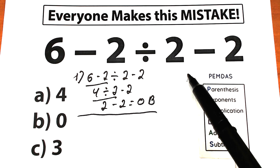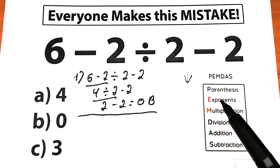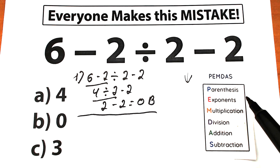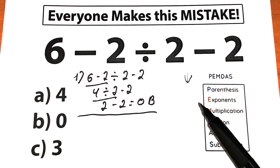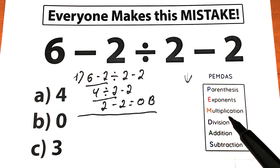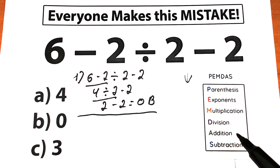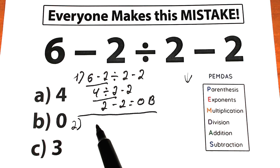How does PEMDAS work? PEMDAS works from the top to the bottom — higher position means higher priority. Parentheses have the highest priority. Next is exponents, like 2 squared or 2 cubed. Then comes the multiplication and division group, and the last step is addition and subtraction. So let's solve our challenge according to PEMDAS.